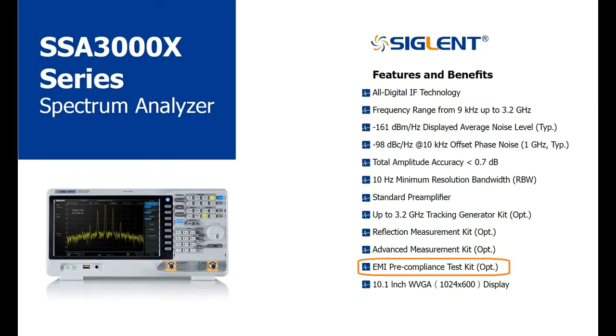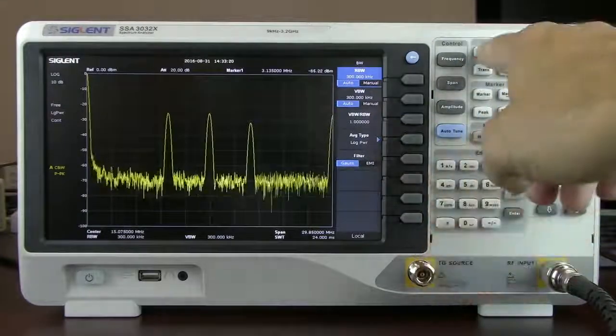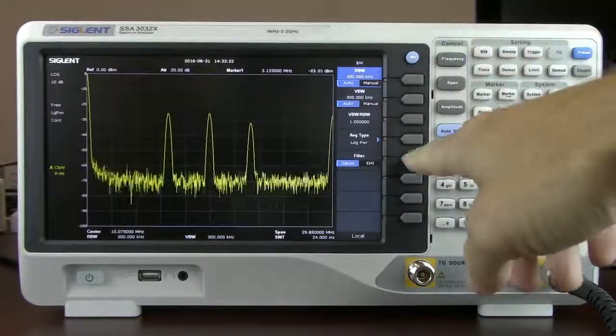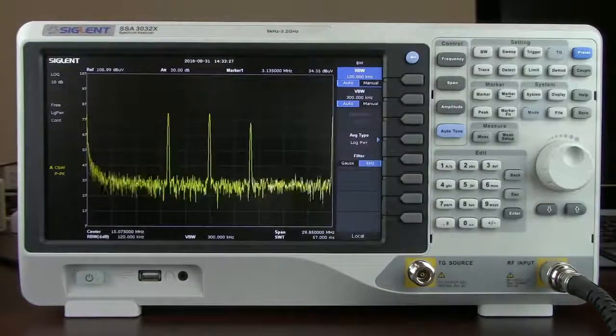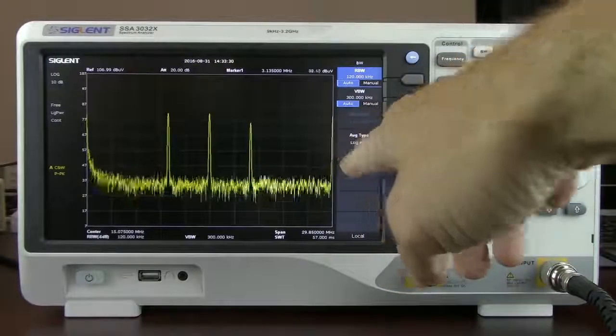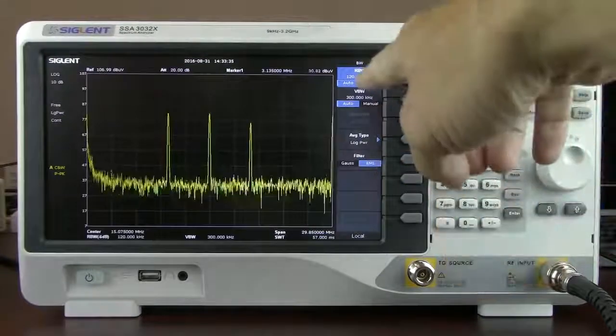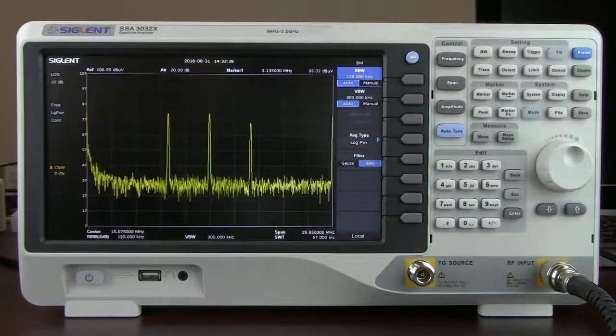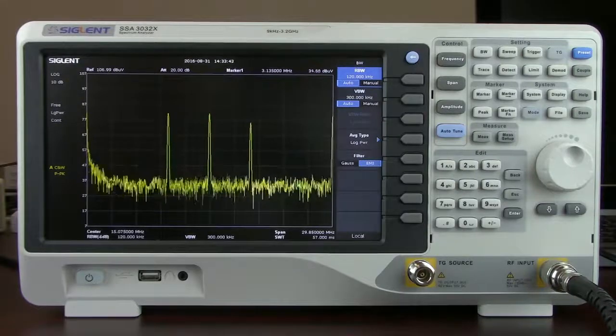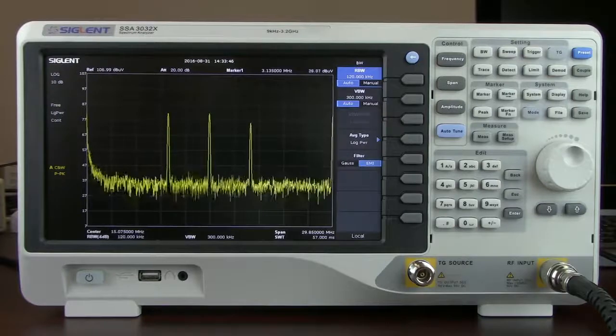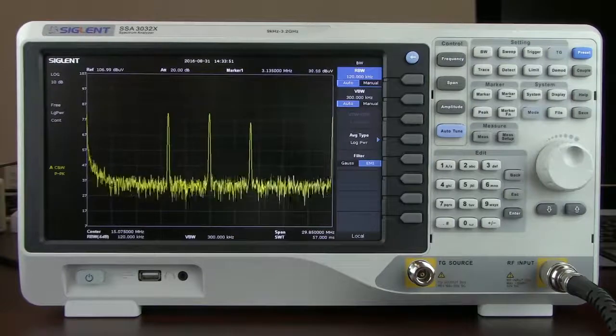Some of the things that come with this particular feature are the EMI filter. We can enable that by pressing the bandwidth key and then enabling EMI. Once you've enabled the EMI filter, that's a 6 dB filter as compared to the normal 3 dB Gaussian filter. That 6 dB EMI filter is going to enable you to select resolution bandwidths of 200 Hz, 9 kHz, and 120 kHz.